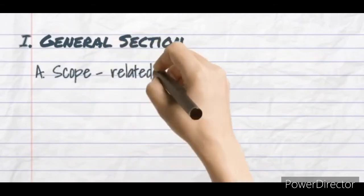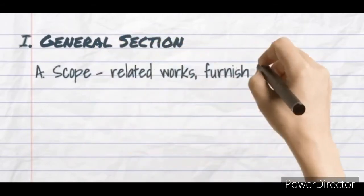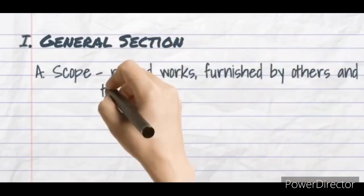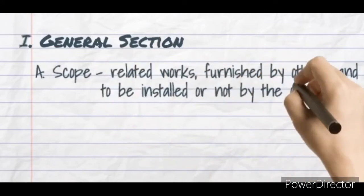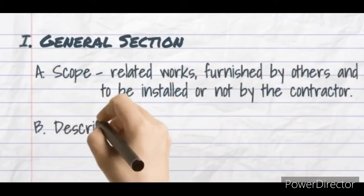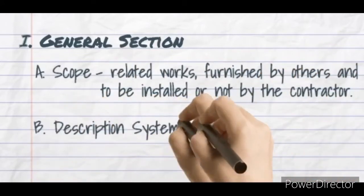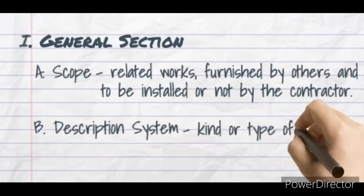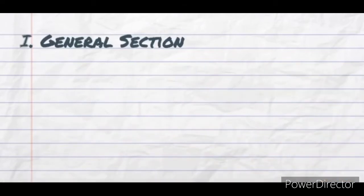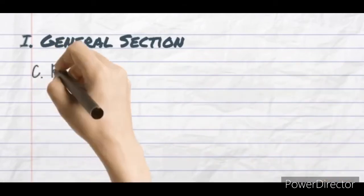Under the general section, the first input shall be the scope — this is where related works are specified, whether to be furnished by others or by the owner, and whether to be installed by the contractor or not. Second is the description system — this is where the kind or type of system, such as a water supply system, is mentioned. Third is reference or requirements of regulatory agencies — this is where permits, codes, ordinances, and design conditions are indicated.